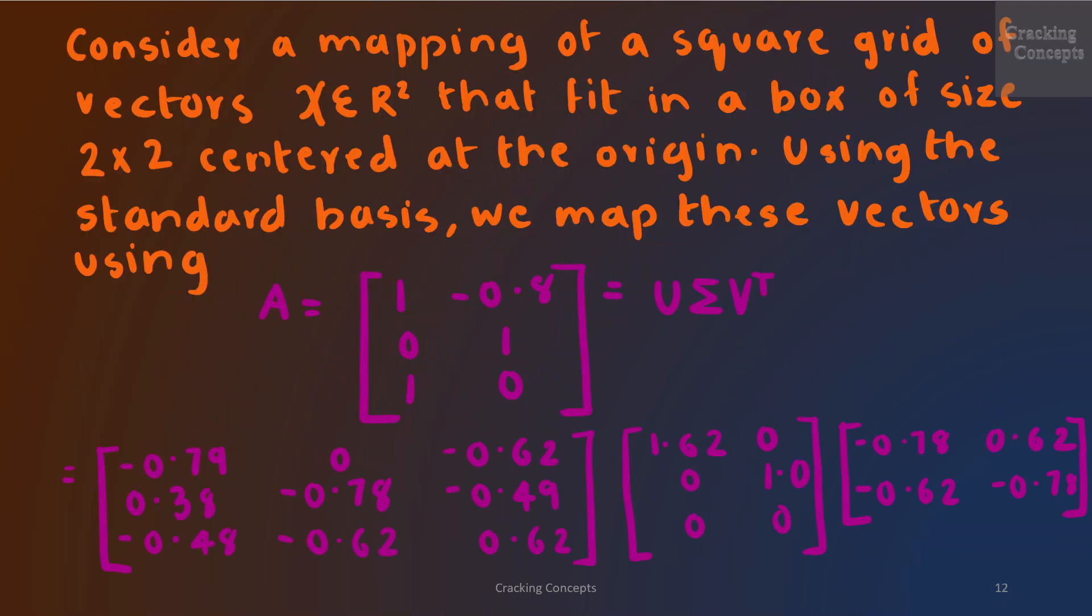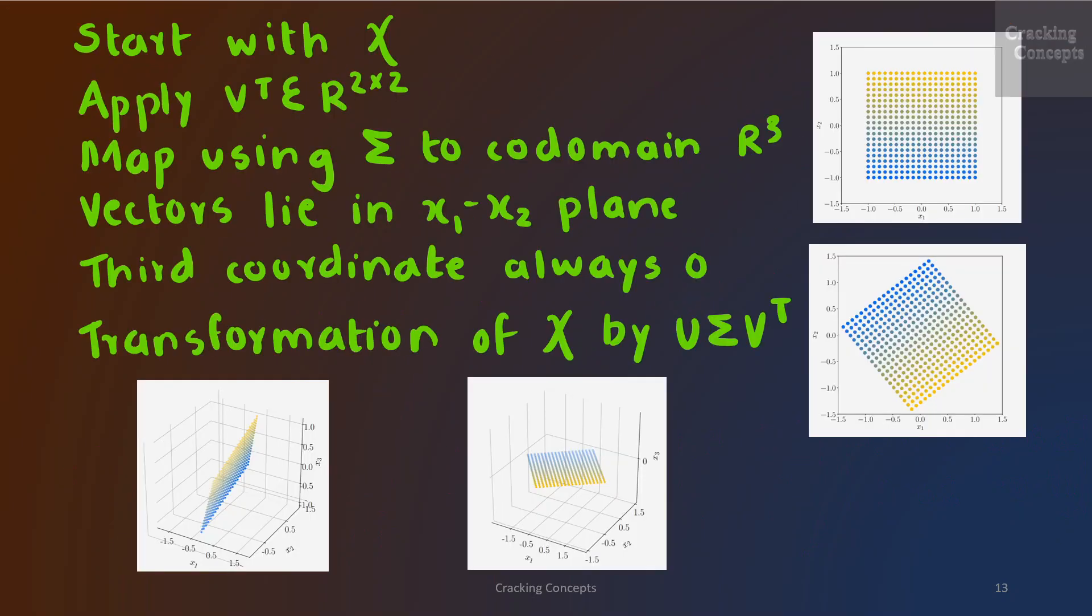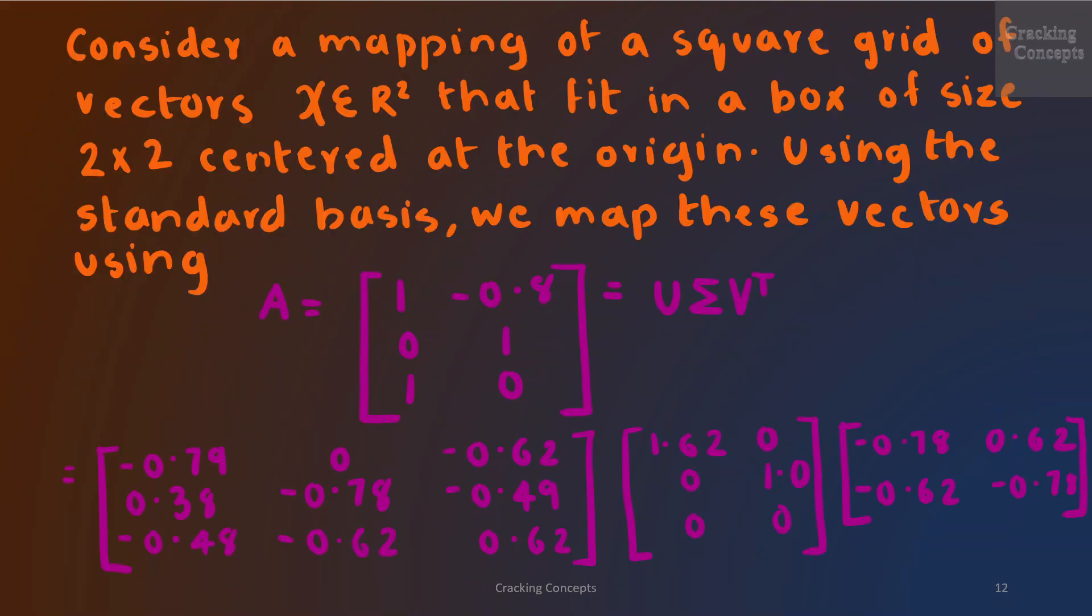Now we'll see an example. Consider a mapping of a square grid of vectors ψ, which is a two-dimensional grid that fits in a box of size 2×2 centered at the origin as shown here. Using the standard basis, we'll map these vectors using the matrix A. Now we need to decompose the matrix A into U, Σ, and V transpose. The final answer is given here.